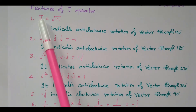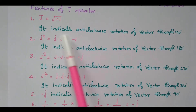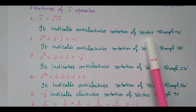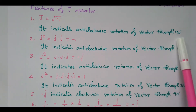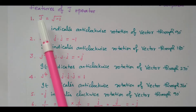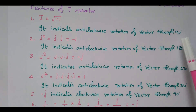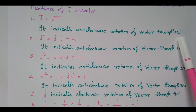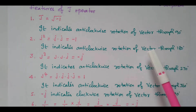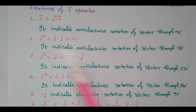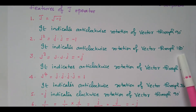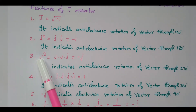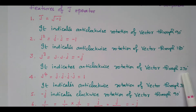What is this J indicator? It is an indicator with anti-clockwise rotation of a vector by 90 degrees. If J is available, we can see that it is rotating in the anti-clockwise direction by 90 degrees. If J squared is available, it is rotating anti-clockwise by 180 degrees. If J cubed is available, it is 270 degrees.